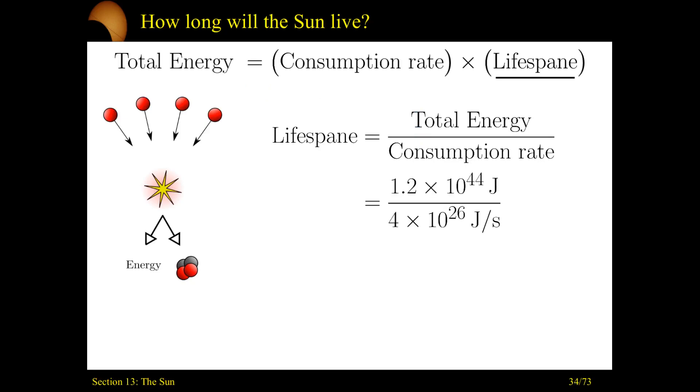So, we'll go back to previous slides, pull these numbers together, and the sun has total energy of 1.2 times 10 to 44th joules. It's consuming them at 4 times 10 to 26 joules a second. And we'll find that the sun will have a lifespan of 3 times 10 to the 17th seconds.